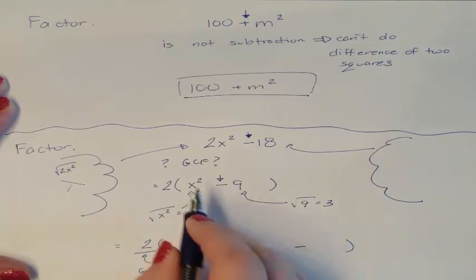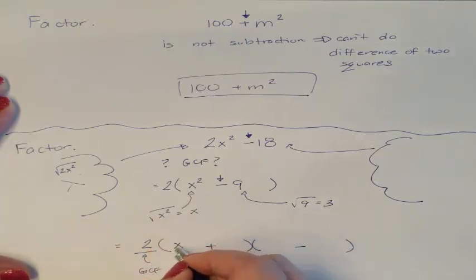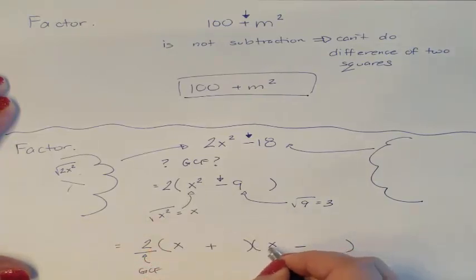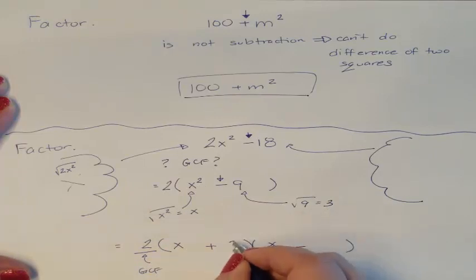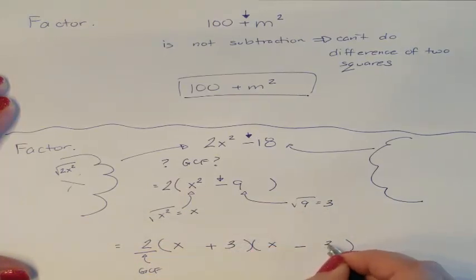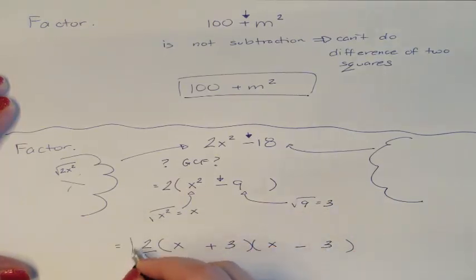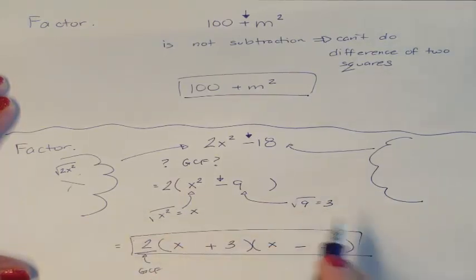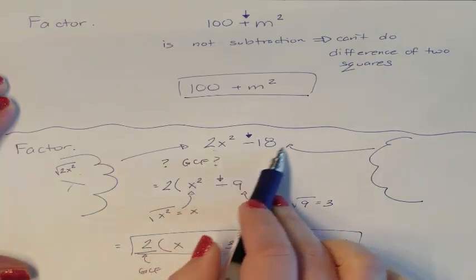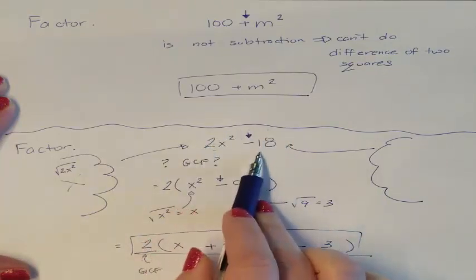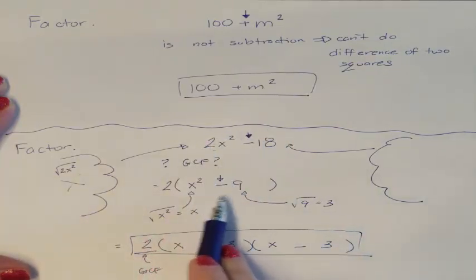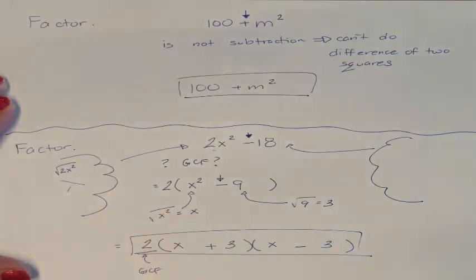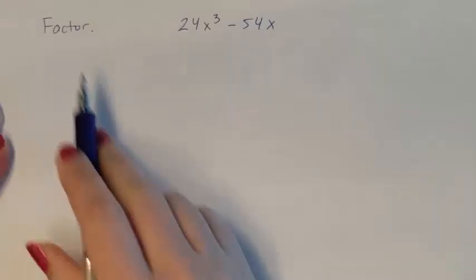So here is my GCF, and then my difference of two squares. You took the square root of x squared and got x. You took the square root of 9 and got 3. So this is my final answer. If you can't do it at the very beginning, check and see if there's a GCF — factor that out, and then see if you can do it.